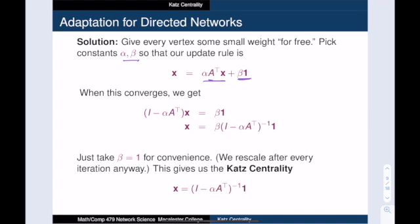So how do we choose the values for alpha and beta? Well, these constants reflect our relative weighting of inherent importance versus importance granted by our neighbors. So, the relative size of alpha and beta is all that matters. So let's take beta equals 1 for convenience. This gives us Katz centrality.